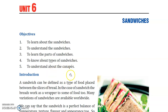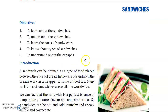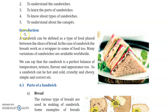We will also understand about canapes. Introduction: a sandwich can be defined as a type of food placed between the slices of bread. A sandwich is a type of food in which the food material is used between two slices of bread. The food material can include potatoes, tomatoes, vegetables, or other stuff.